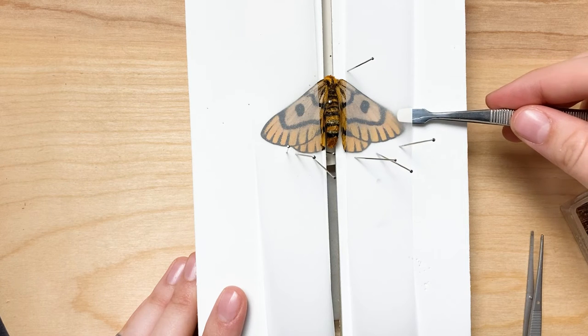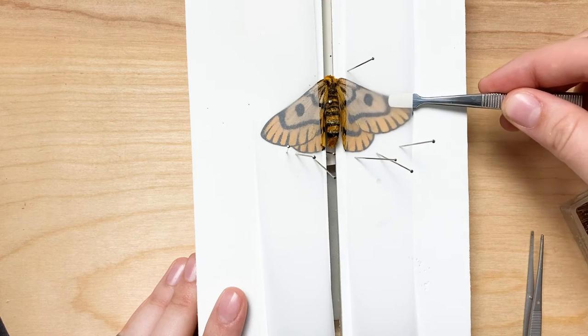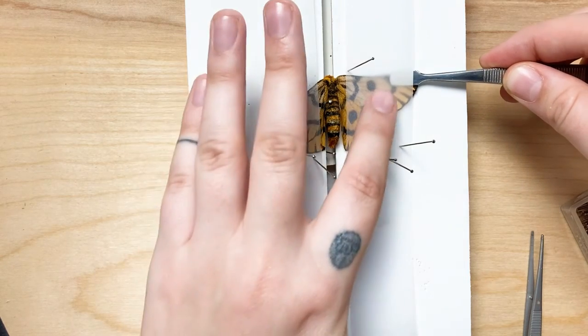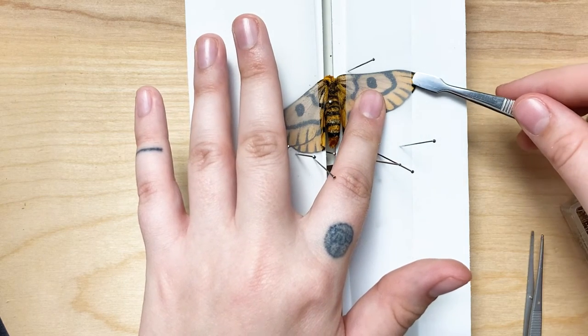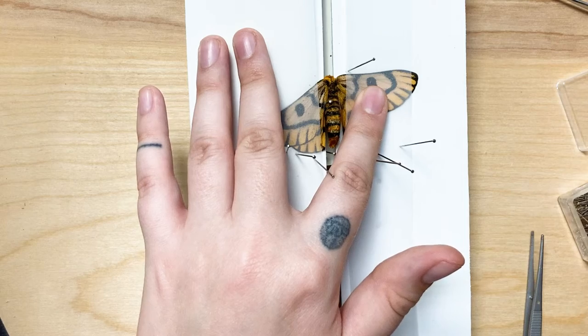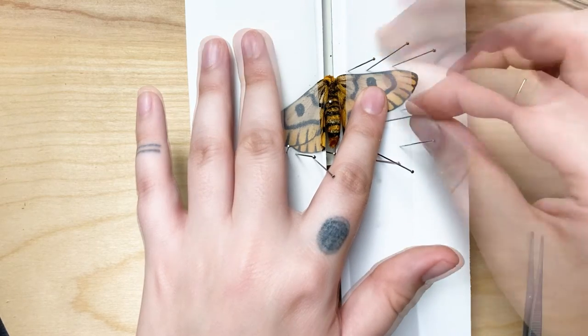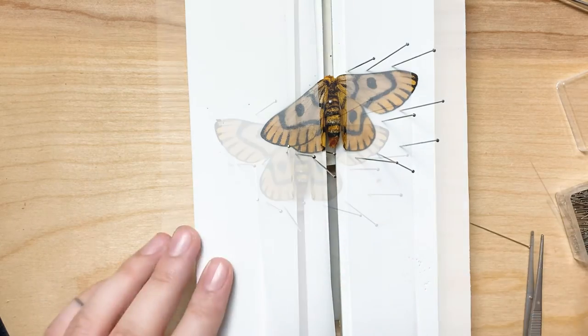I've got these nice tweezers that I'm going to use to gently pull the fore wing up, and once I've got it in a position that I like, I will pin the paper all around the wings. All this time I'm using reference images from the internet just to see what is the most lifelike position for this moth to be in.